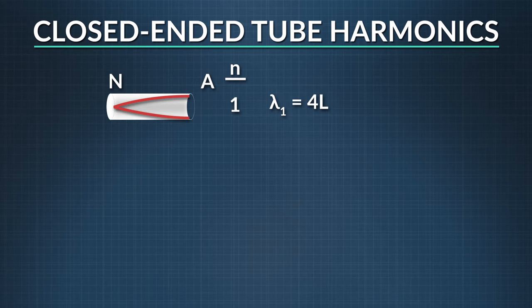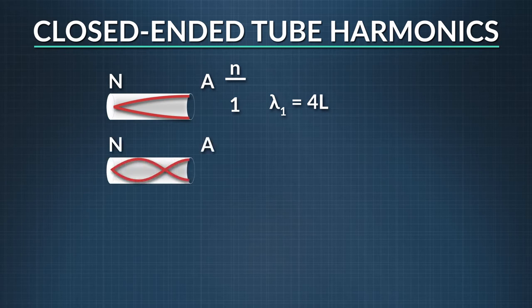Because the anti-node is at the open end and the node is at the closed end, each harmonic only happens with the addition of half of a wave, which means the harmonics are odd multiples, 1, 3, 5, etc.